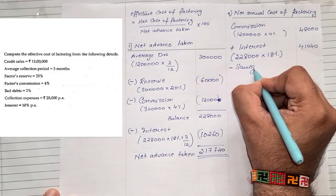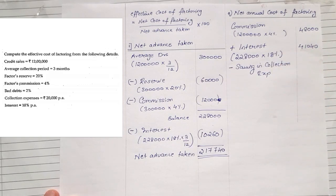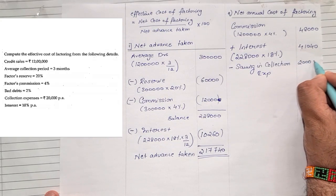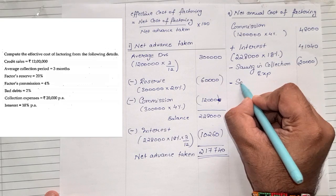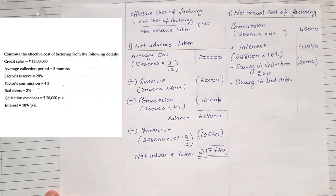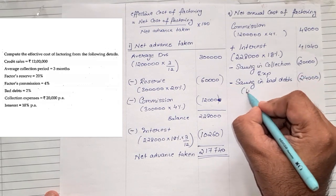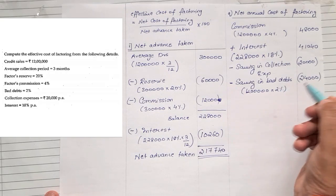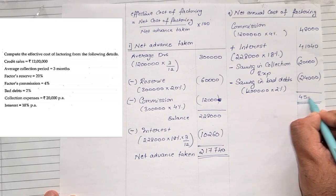Less saving in collection expense — because we are hiring a factor, we won't spend money on collection. The collection expense given is 20,000 per annum, so 20,000 gets saved. We also save on bad debts. Bad debts given is 2%, so 12 lakhs into 2% is 24,000. Totalling up: 48,000 plus 41,040 minus 20,000 minus 24,000 gives us 45,040.